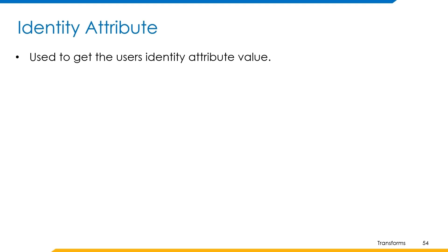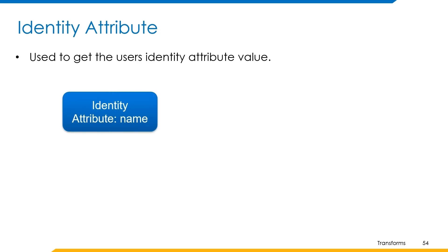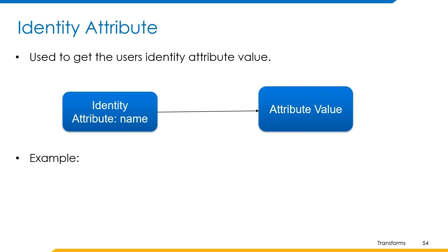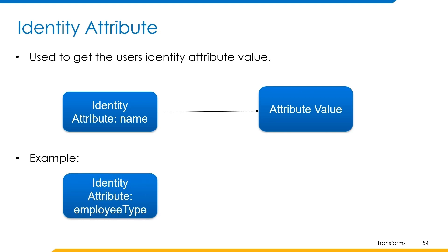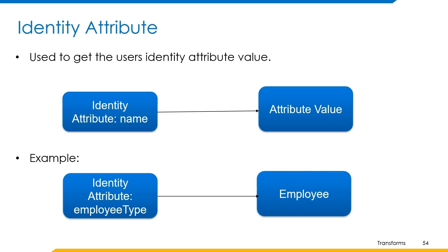Identity attribute transform is used to get the user's identity attribute value. We provide the attribute name as input to the transform and its value will be returned. For example, consider the identity attribute employee type with a corresponding value of employee. If we pass employee type to the identity attribute transform, then its value employee is returned as output.